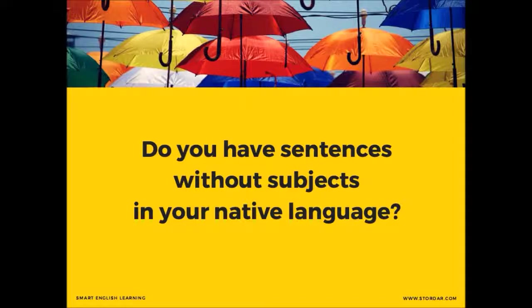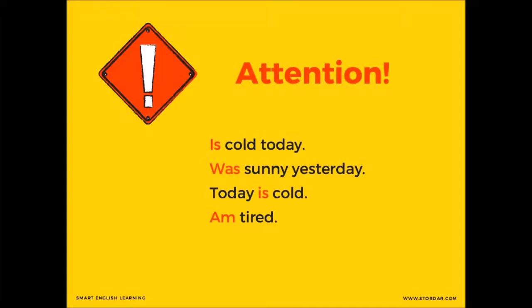We say 'сегодня холодно' in Russian — like, 'today cold.' That's all. 'Dziś jest zimno' in Polish — 'today is cold.' 'Hace frío' in Spanish — 'makes cold.' And so on. 'Сегодня' and 'dziś' both mean 'today.' They are objects of time placed at the beginning of the sentence, but they don't become the subject. And this is not possible in English. You need to get the subject. So when you translate your mind into English, you get 'is cold' or 'today is cold' — and both of them are wrong.